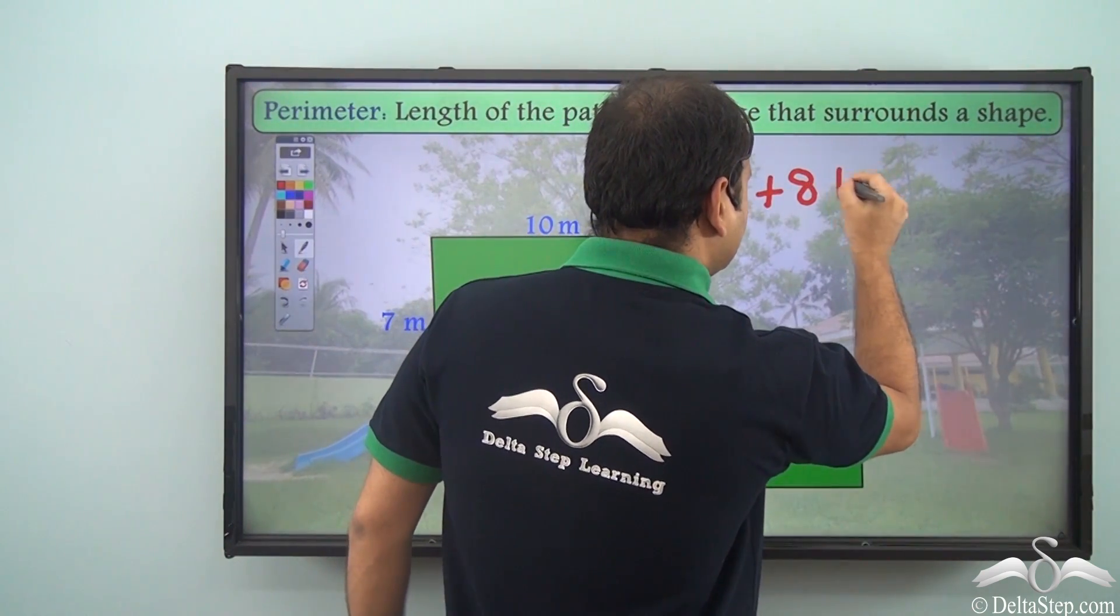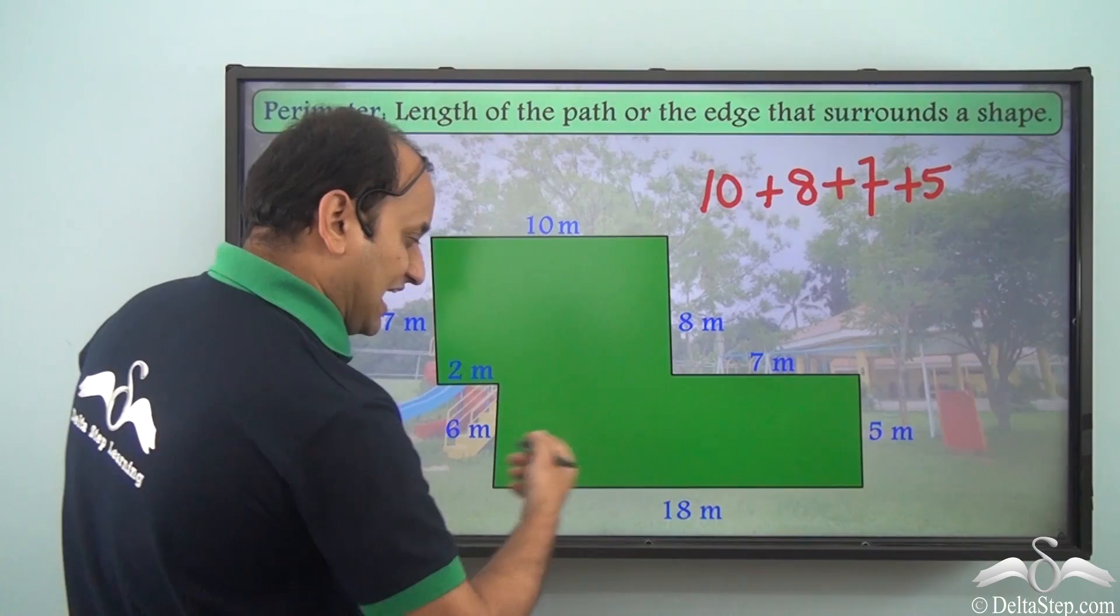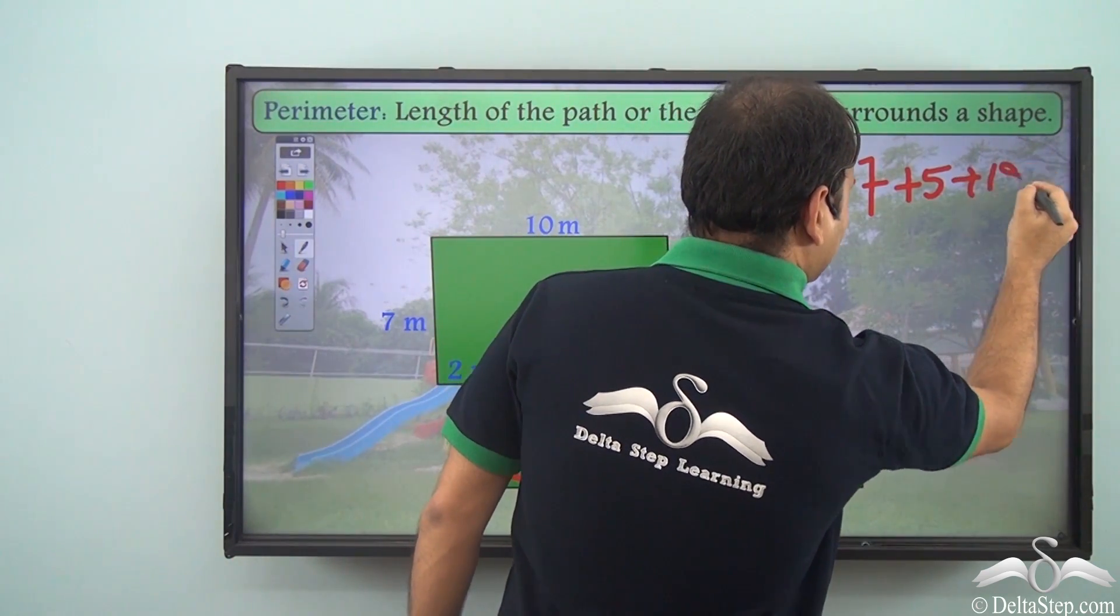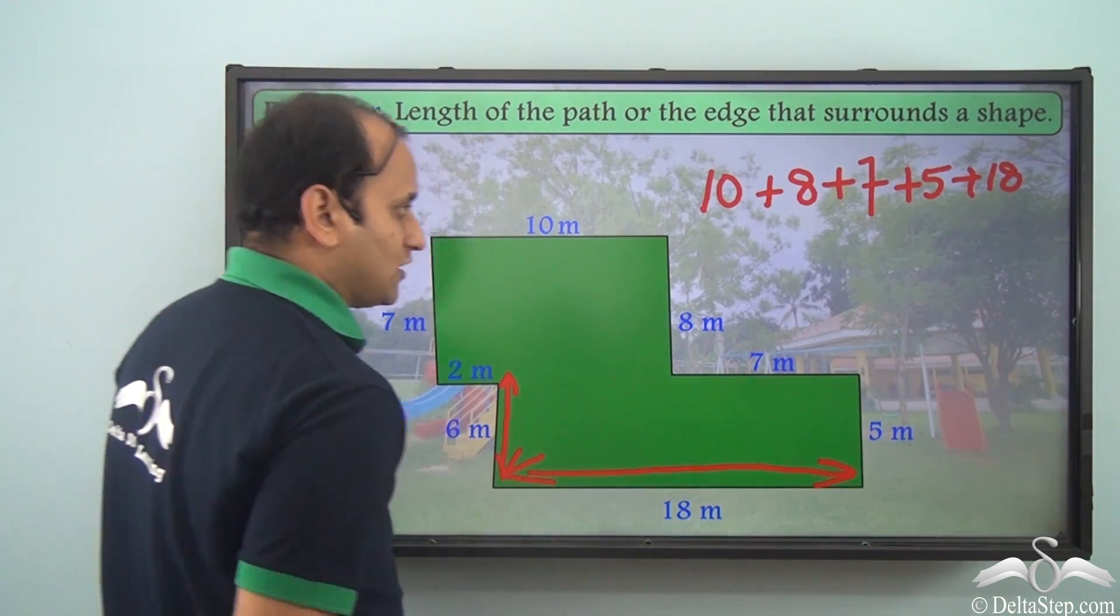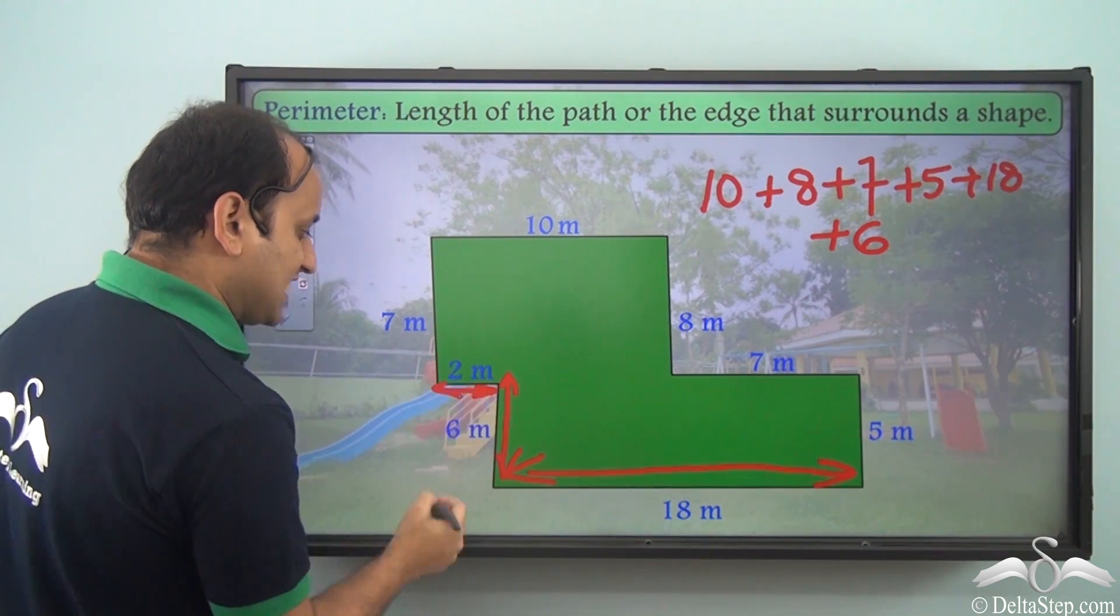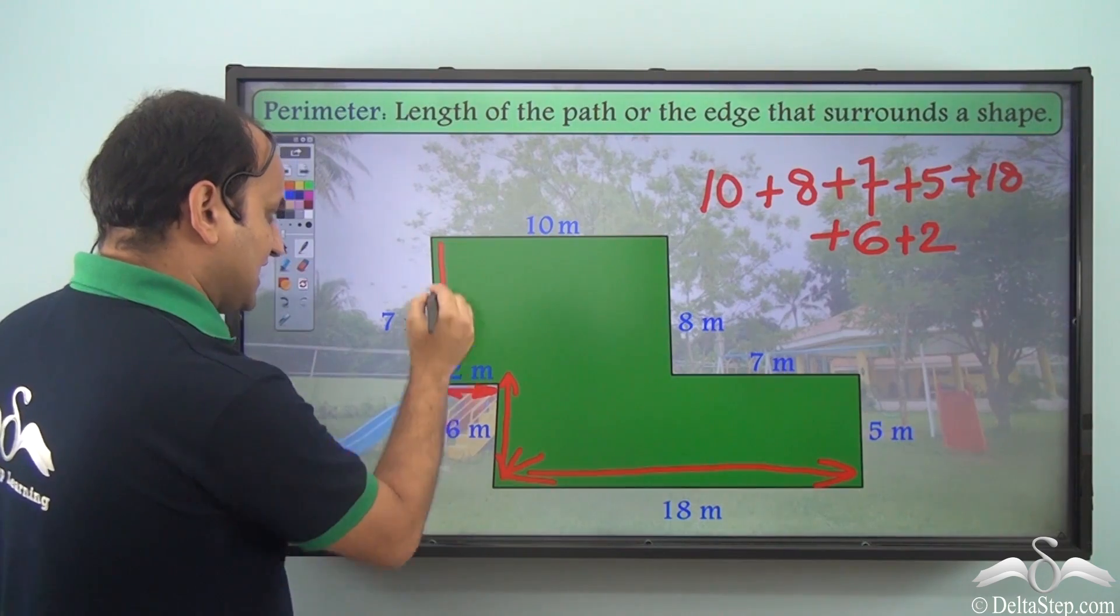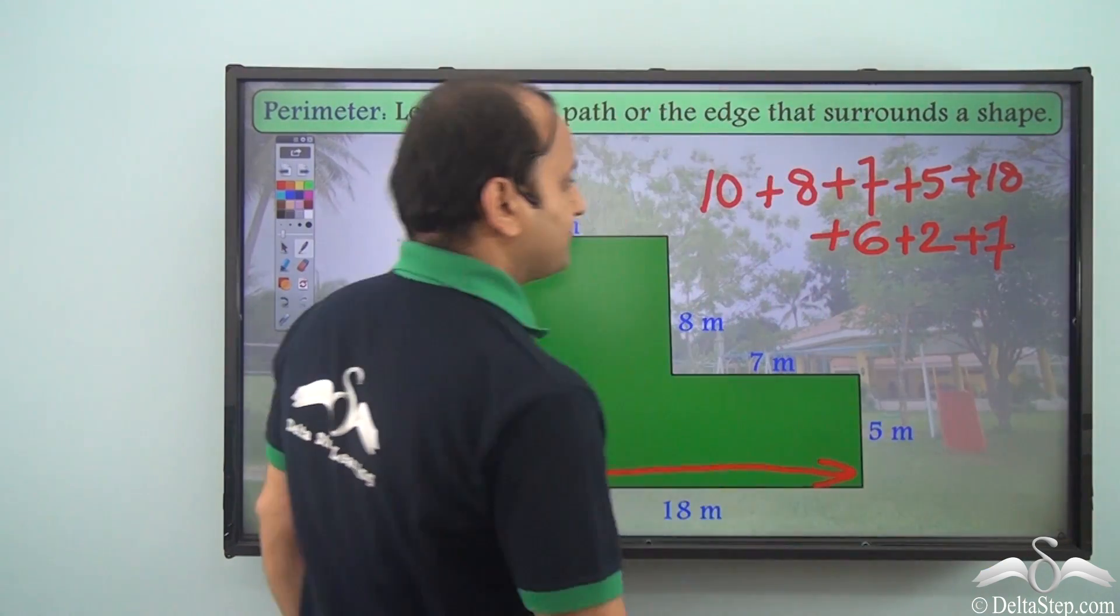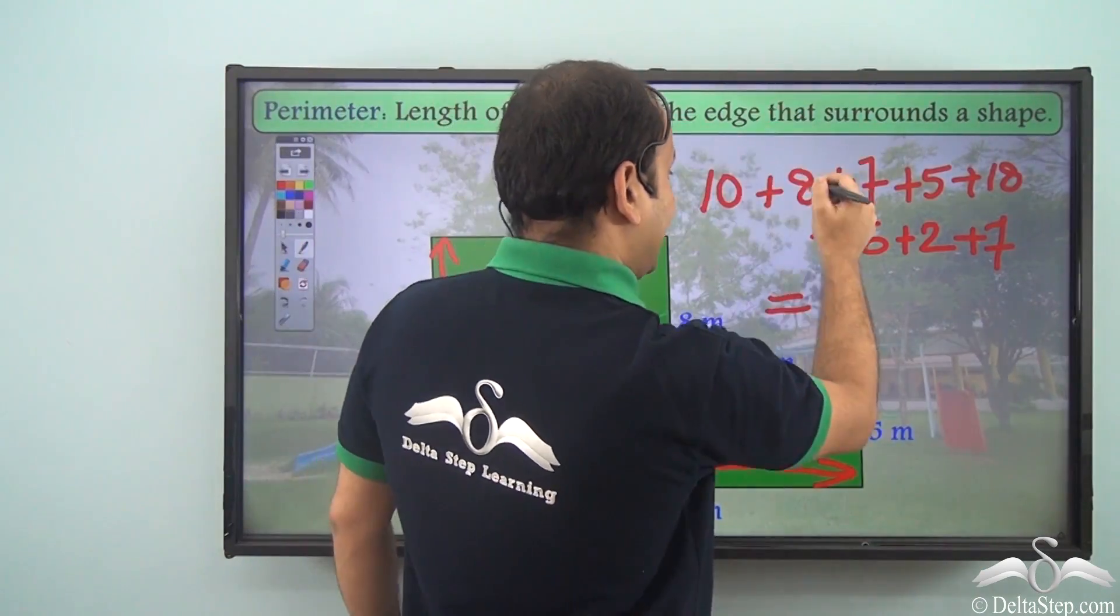8, 7 meters. This is 7 meters, 5. Next we have this side. So this side is 18 meters long, so plus 18. Now this side is 6 meters long, plus 6. Then I have this side which is a smaller side, just 2 meters long. 2, and then I have this side which is 7 meters long, so plus 7. Now if I add all these, what do I get? Well, I have 10 plus 8 is 18.